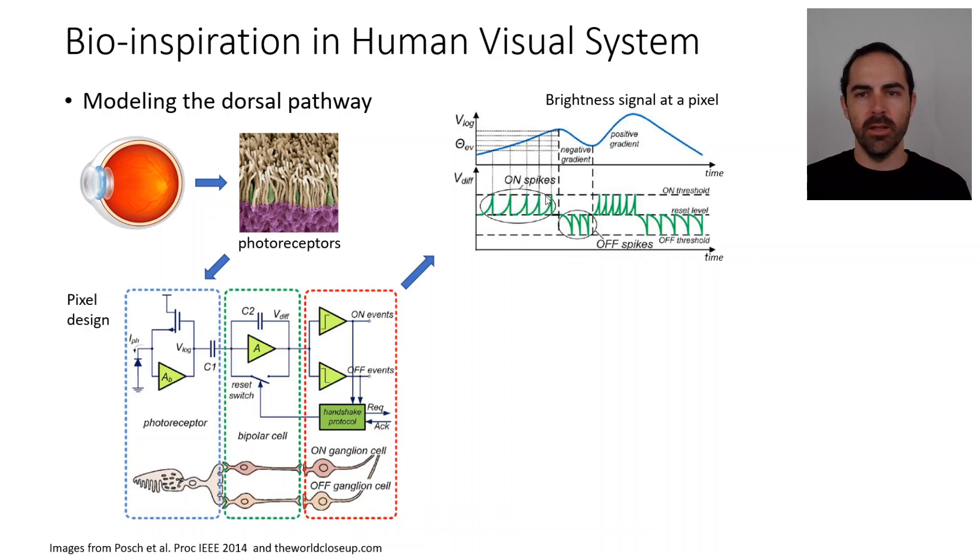In this other region, light is decreasing. What happens is that light is integrated and then it crosses the other threshold, the off threshold, and then we have several off spikes or off events, and so on.